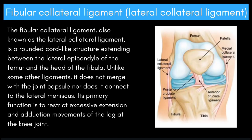I'd like to start off by talking about the fibular collateral ligament, also known as the lateral collateral ligament. It is a rounded cord-like structure extending between the lateral epicondyle of the femur and the head of the fibula. Unlike some other ligaments, it does not merge with the joint capsule, nor does it connect to the lateral meniscus. Its primary function is to restrict excessive extension and adduction movements of the leg at the knee joint.